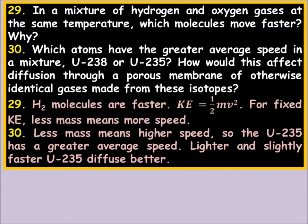In a mixture of hydrogen and oxygen gases at the same temperature, which molecules move faster and why? Hydrogen molecules are faster. KE = ½mv². For fixed KE, less mass means greater speed. If you have a bug and a car with the same energy, the bug is moving extremely fast by comparison.